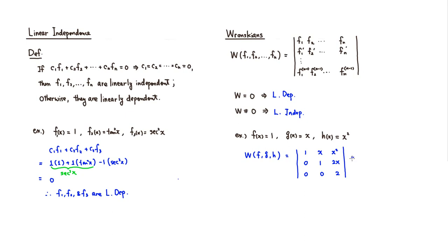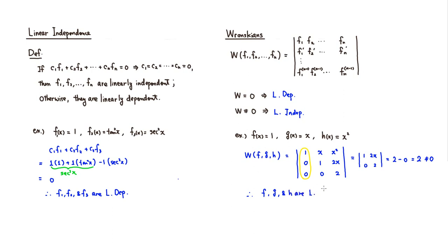Expanding along the first column, we get 1 times the determinant of [1, 2x; 0, 2], which equals 1 times (1·2 − 2x·0) = 2. Since the Wronskian equals 2, which is not equal to 0, f, g, and h are linearly independent.